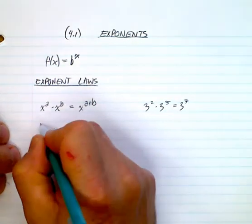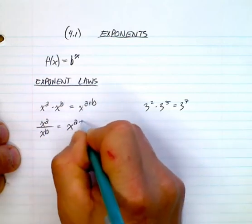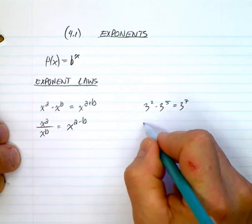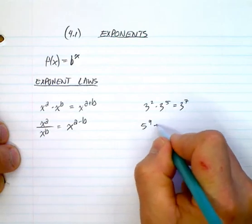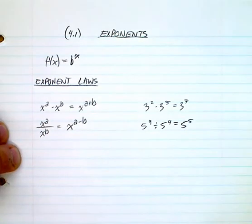Similarly, if I have x to the a divided by x to the b, what we have is a subtraction of exponents. So five to the power of nine divided by five to the power of four is equal to five to the power of five. So another example, right.